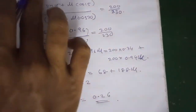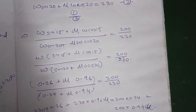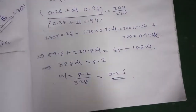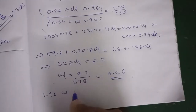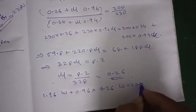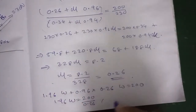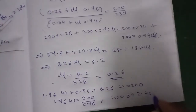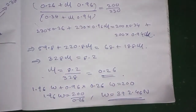Now substituting mu equals 0.26 back into the first equation: W sin 15 plus mu W cos 15 equals 200. So 0.26 W plus 0.26 times 0.96 W equals 200, giving W equals 392.46 Newton. That is the final answer. We will meet in the next video.